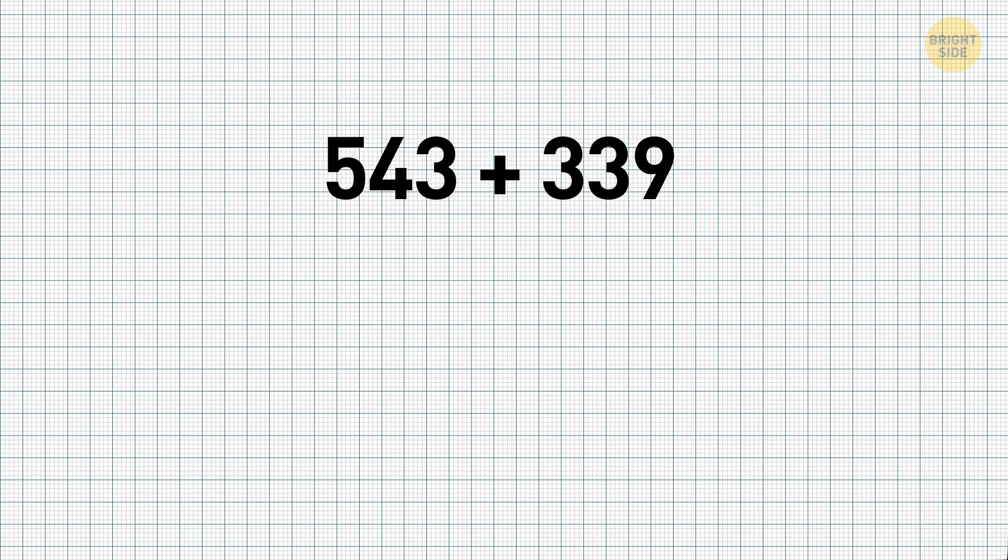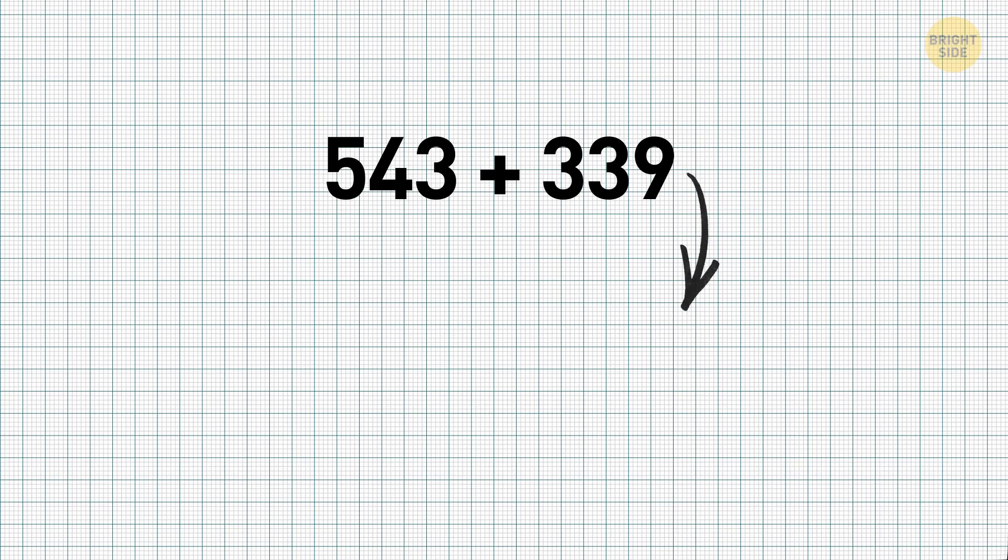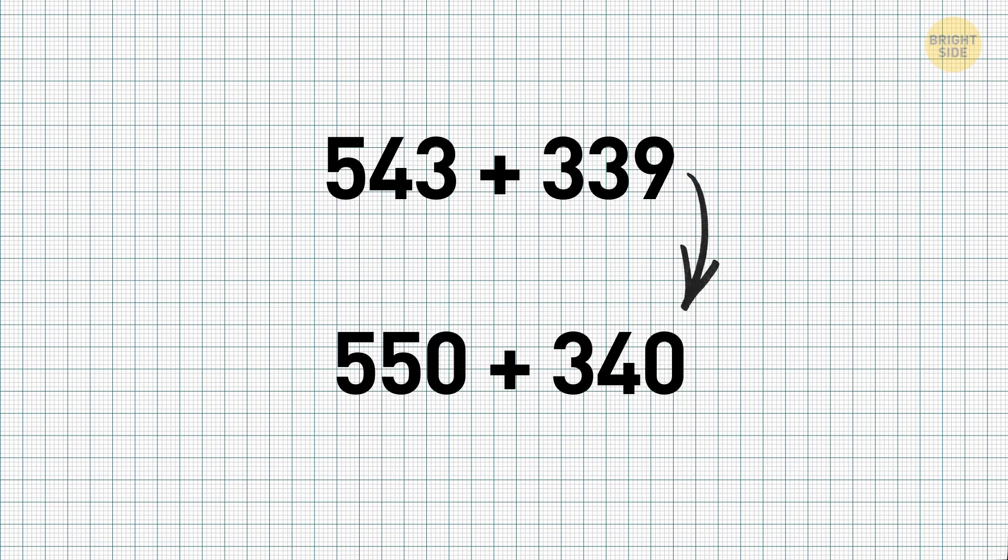543 plus 339. Even adding these numbers on paper can be challenging, but rounding them up will make it much more manageable. In this case, 543 is rounded up to become 550, and 339 turns into 340.